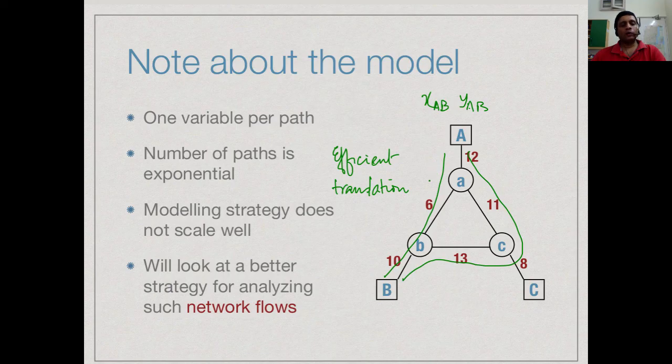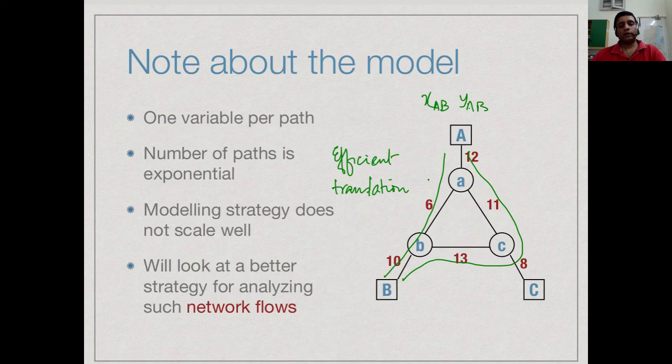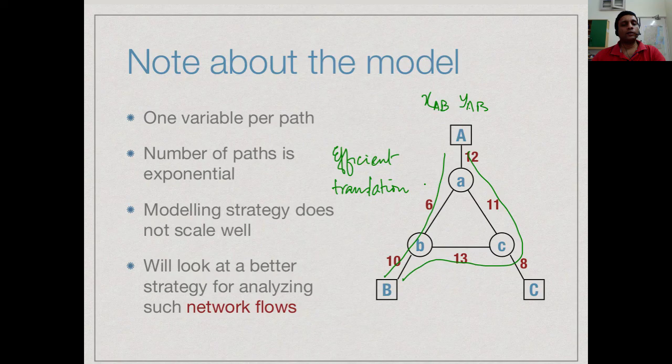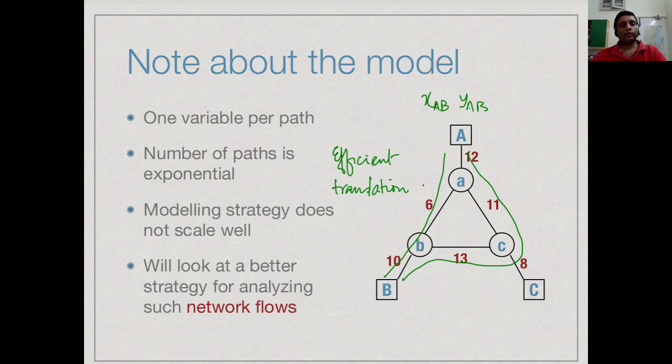But we will look at another way of looking at these network flows as they are called and see that in general network flows can be easily represented in terms of linear programs. But it is important to note that in general, when we do a translation into a linear program, we would like the number of variables we get to be small, say polynomial in the input problem. In the input problem, if we have a certain size, the linear program should not blow up.